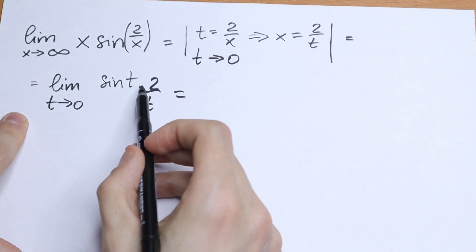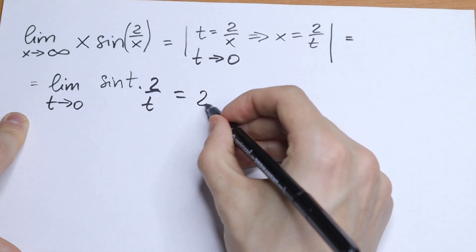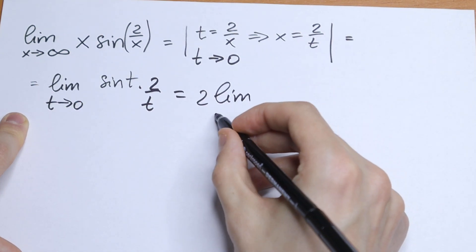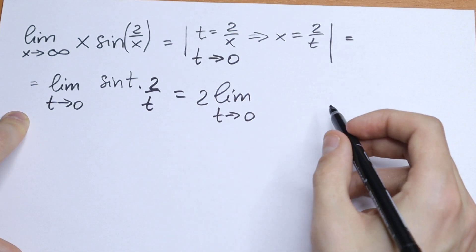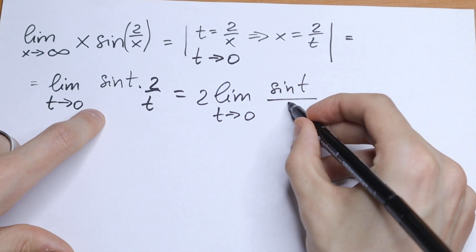So take a look. This is a constant so we can write this constant before this limit. So we will have 2 times limit t approaches to 0 of the function sine t over t.